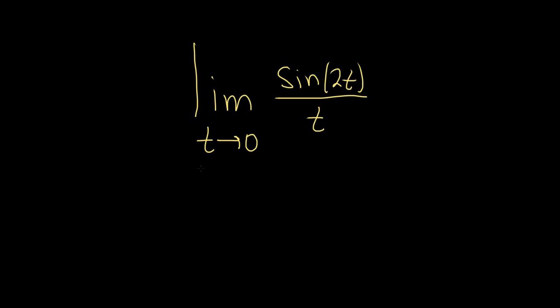Find the limit as t approaches 0 of the sine of 2t over t. So to do this problem, we're going to use a formula.